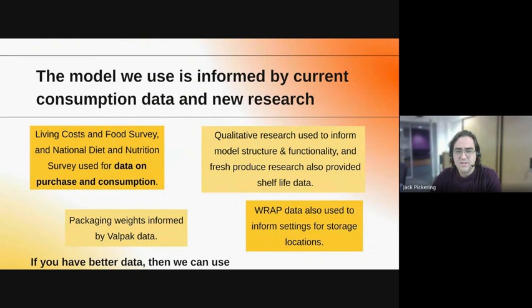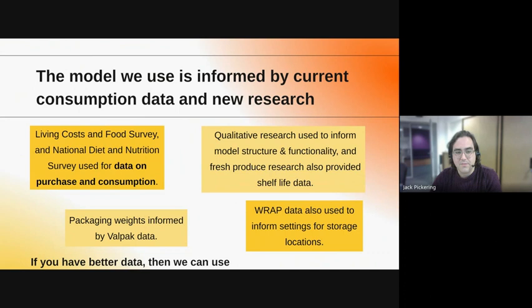To finish off the webinar, here is some additional background on the model, mainly about the sources of data that informed it. We've used a wide range of datasets — both secondary and primary data. For example, we used data from the Living Costs and Food Survey and the National Diet and Nutrition Survey to create data on purchasing habits and consumption to inform the different household types. For packaging weights we used VALPAC data, and we also used proprietary DAP data to inform the settings for storage locations in the model. In addition, our project had two work packages producing primary data to be used in constructing how the model worked.